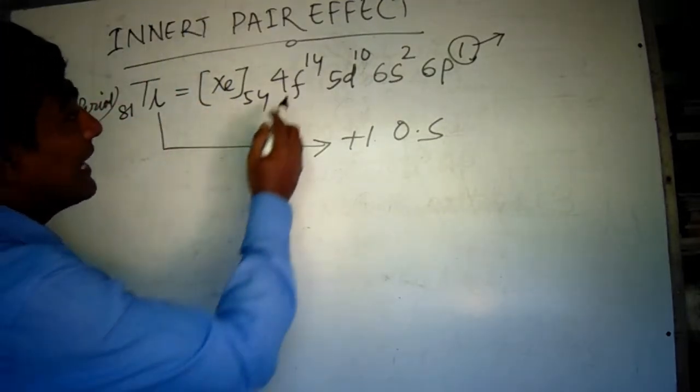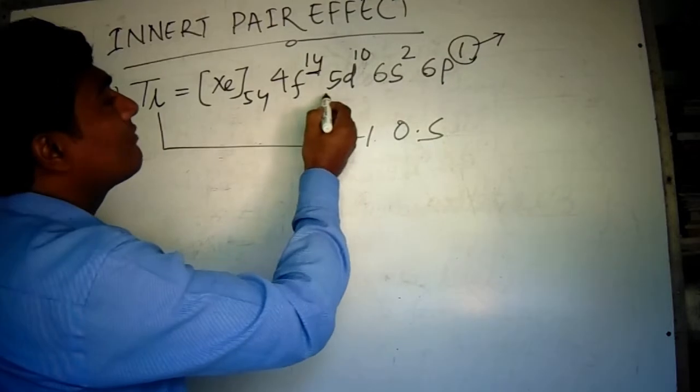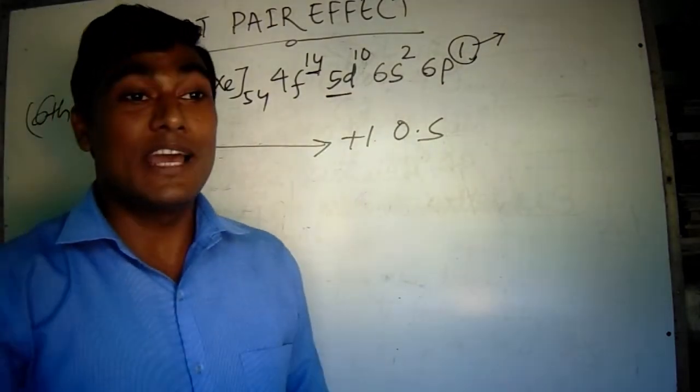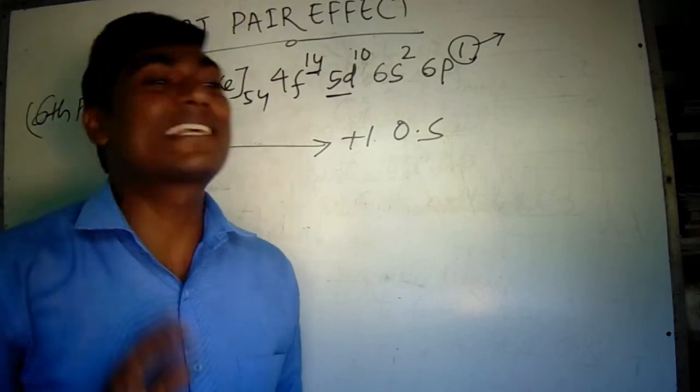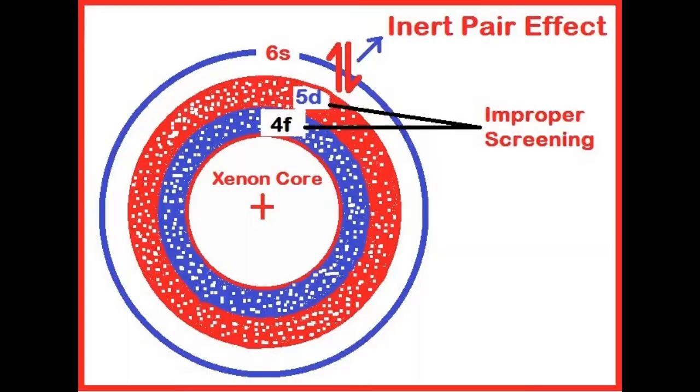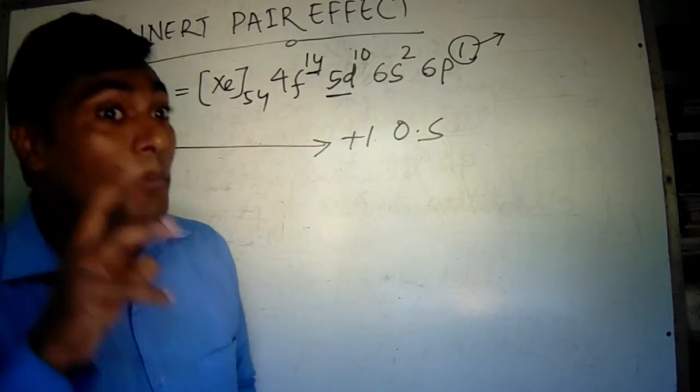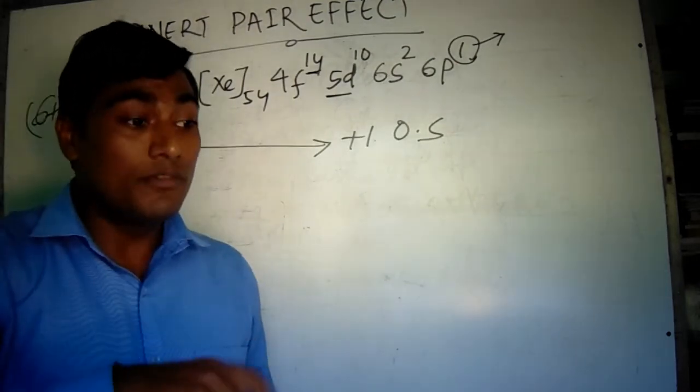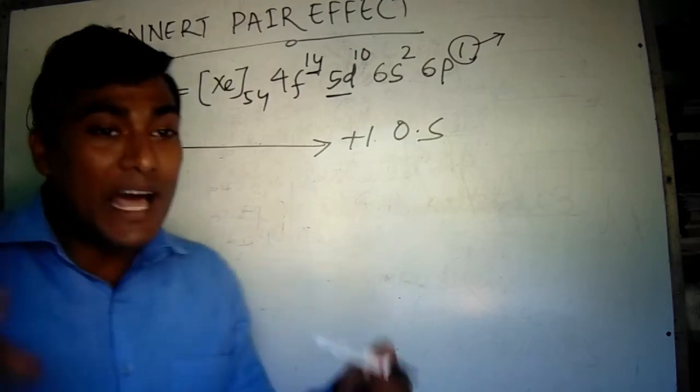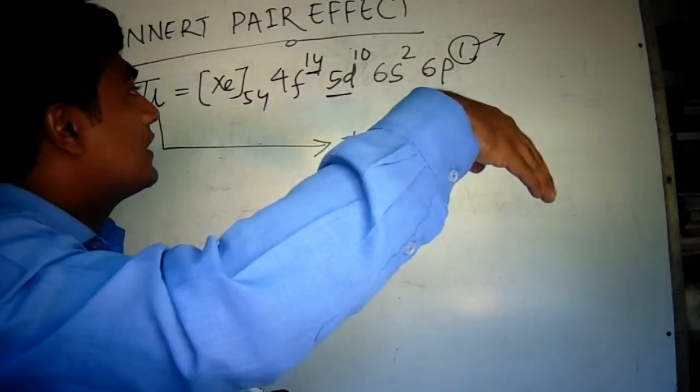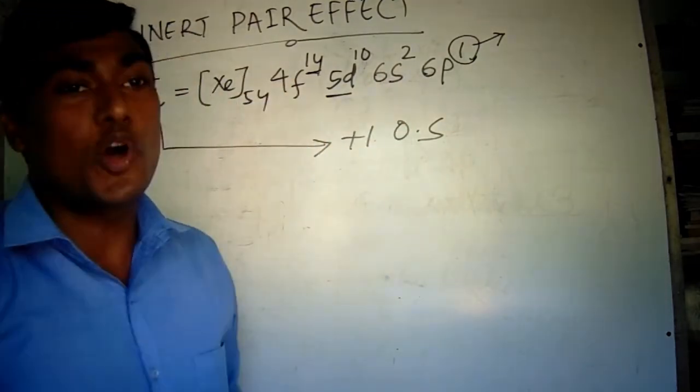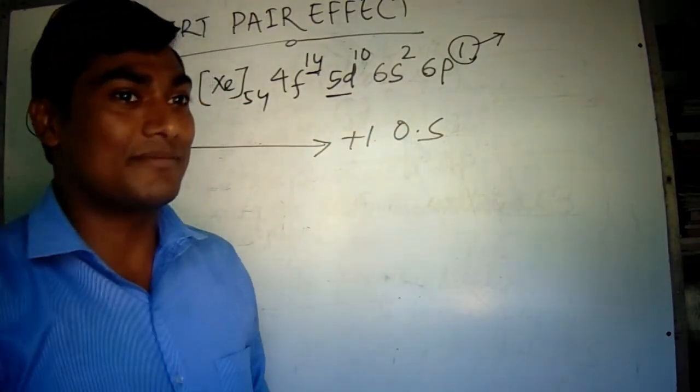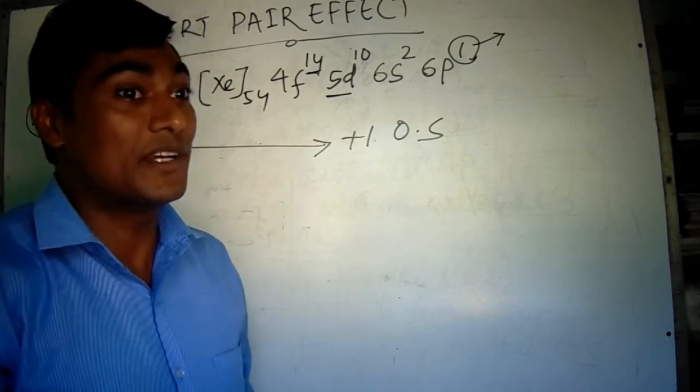This is again why? Because the electrons in 4F subshell and 5D subshell, as you know clearly, they can't screen the nucleus properly. So the force with which the nucleus of the thallium attracts the electrons in S orbital becomes greater, which we expect should not be like that due to screening effect.